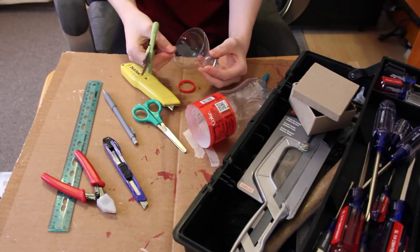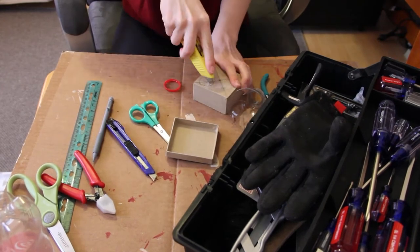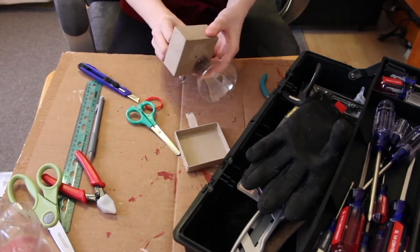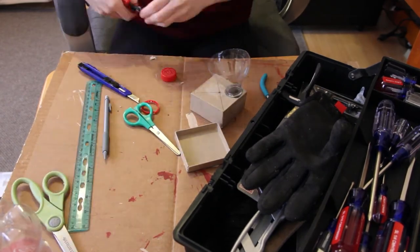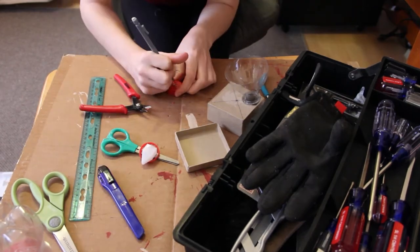I also made a hole in the side of the box that the potentiometer would stick through so that the user would be able to turn. I also utilized the cap of the pop bottle as a little holder for the speaker, which you'll see come together in a little bit.